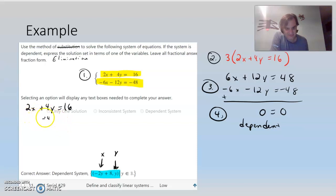So we will take the 4Y over. So we'll have 2X equals negative 4Y plus 16. And then we'll divide by 2. And we get X equals negative 2Y plus 8.